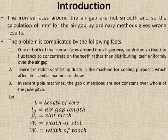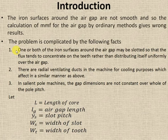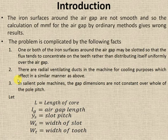Generally, the iron surfaces around the air gap are not smooth. Hence their MMF calculation by normal methods gives wrong results. Unsmooth surfaces occur around the air gap due to the following three facts.